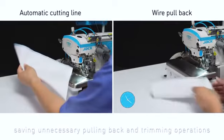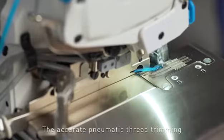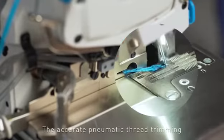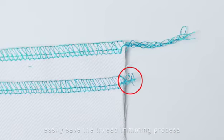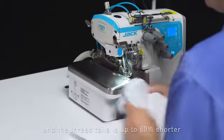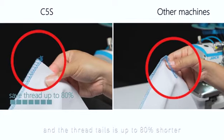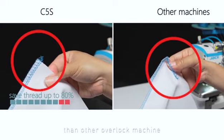It saves unnecessary pulling back and trimming operations. The accurate pneumatic thread trimming device can shorten the thread tails without manual trimming, easily saving the thread trimming process. The thread tails are up to 80% shorter than other Overlock machines.